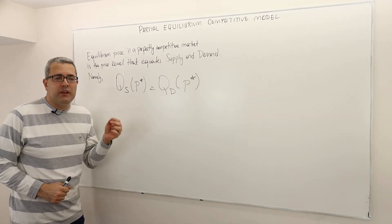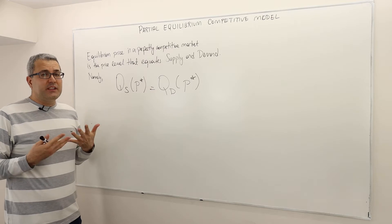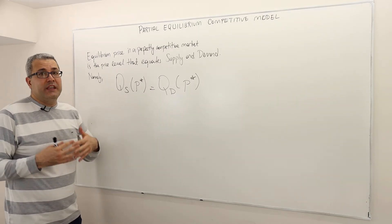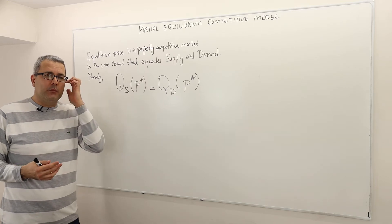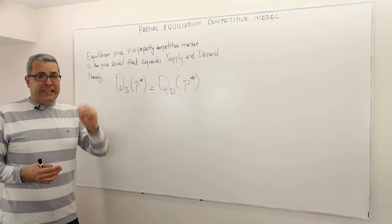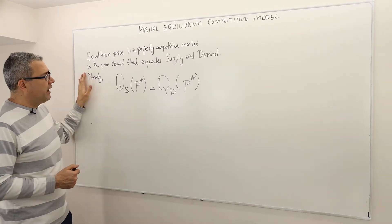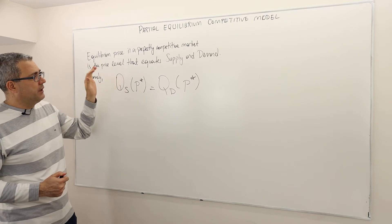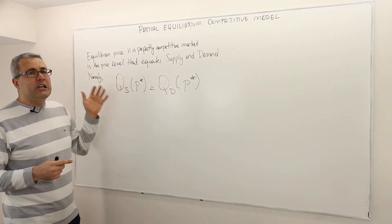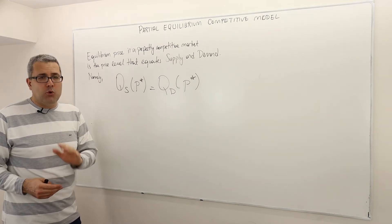How is the perfectly competitive market price determined? That's a definition. We define equilibrium price. We assume that in a perfectly competitive market, the market price should be the equilibrium price. The equilibrium price is the price level that equates supply and demand — or quantity supplied and quantity demanded.